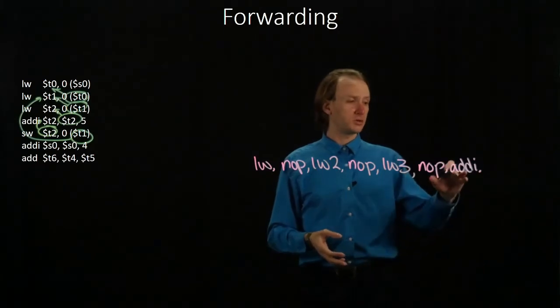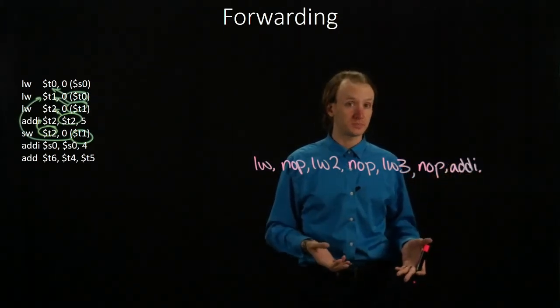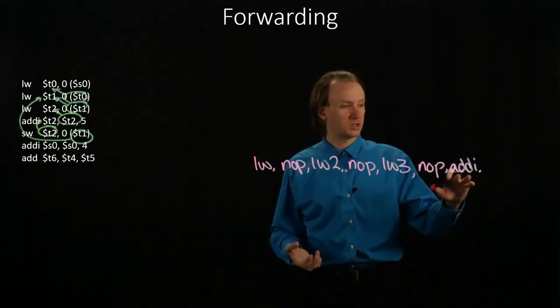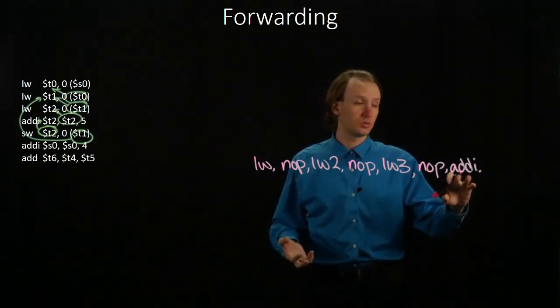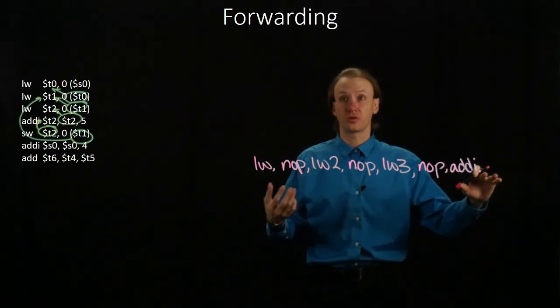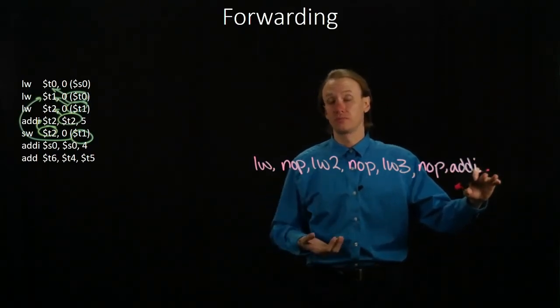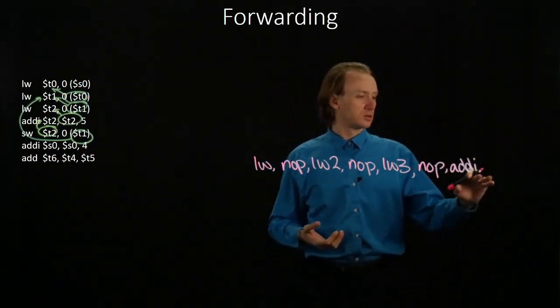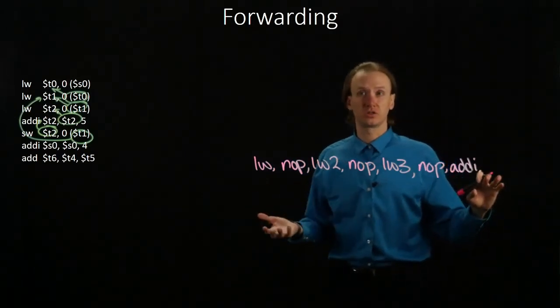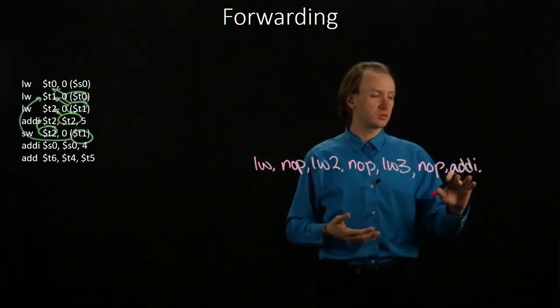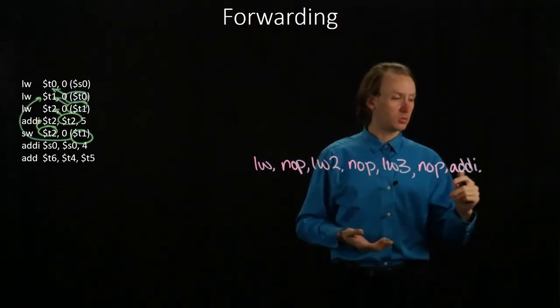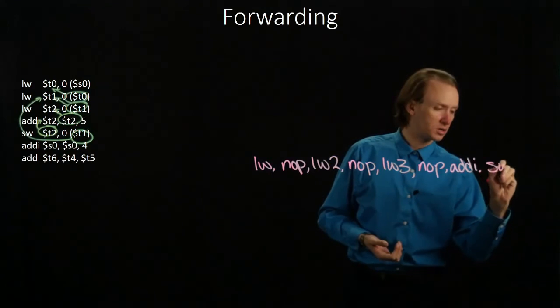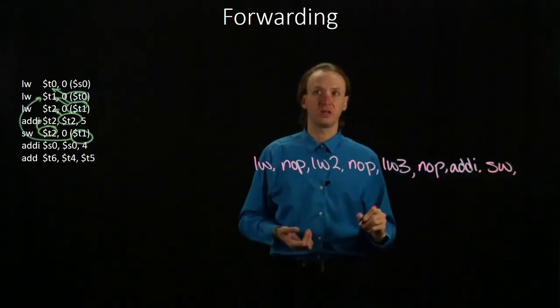But T2 comes from our add immediate instruction. In this case, our add immediate instruction computes its results in its third stage, so those will be available for the third stage of the store word. Now realistically, our store word instruction won't use those until its fourth stage, so they're certainly going to be ready for our store word in time. So our store word instruction will be able to run immediately after our add immediate instruction.